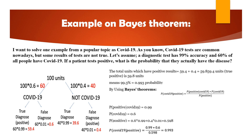Therefore, P(COVID-19 | positive) = 0.99 × 0.6 / 0.598 = 0.993. So the probability that a patient who tests positive actually has COVID-19 is approximately 99.3%.